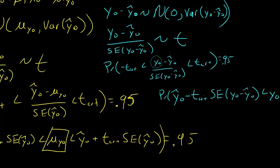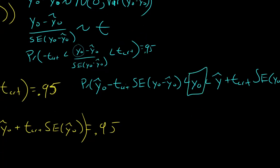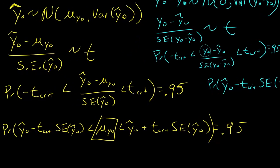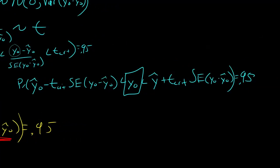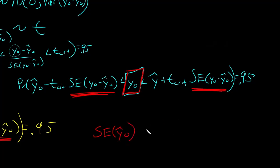You can see that the confidence interval and prediction interval look nearly exactly the same in form. The main differences are: the confidence interval has the mean response in the center with the standard error of y-hat-naught, while the prediction interval has the predicted value y-hat-naught in the center with the standard error of y-naught minus y-hat-naught. This standard error of y-hat-naught is less than the standard error of y-naught minus y-hat-naught, which is why prediction intervals are wider. I'll provide a link in the description for more discussion of these two calculations.